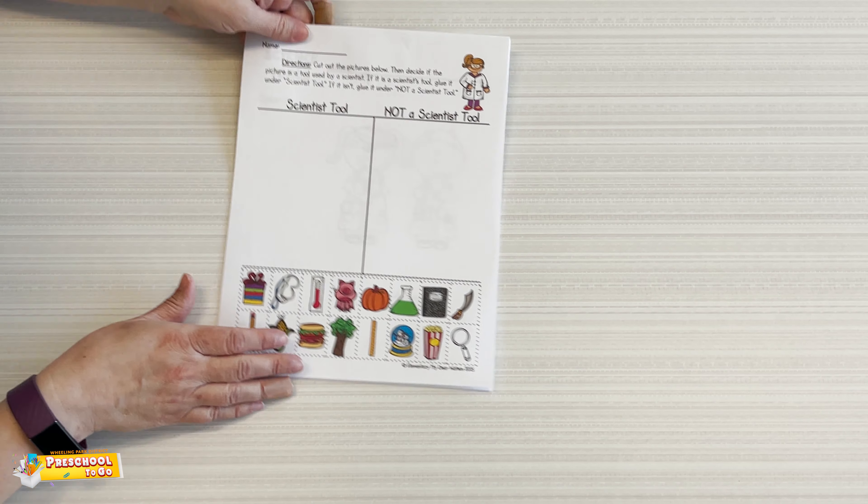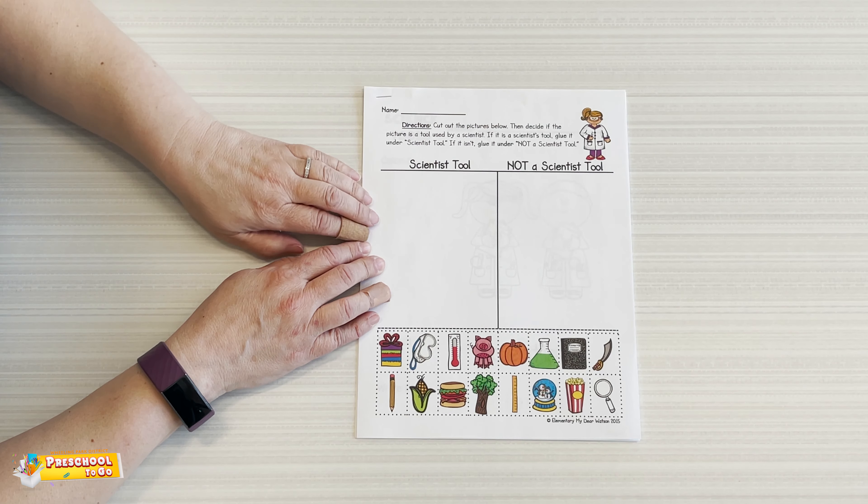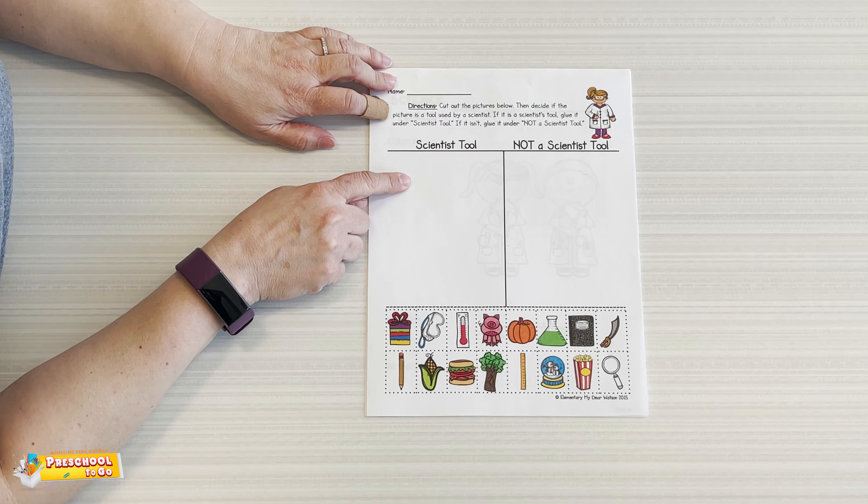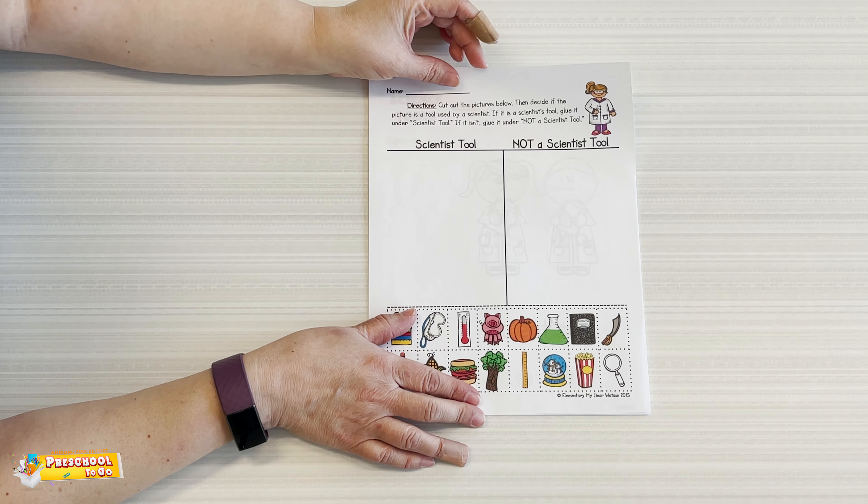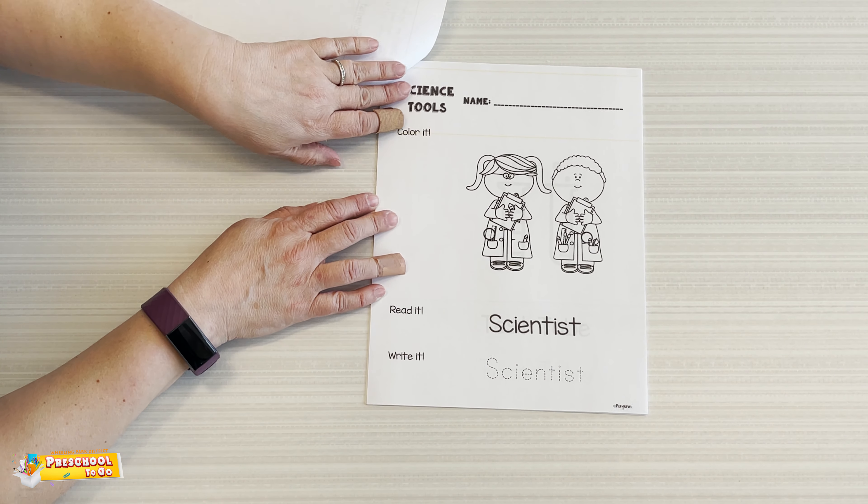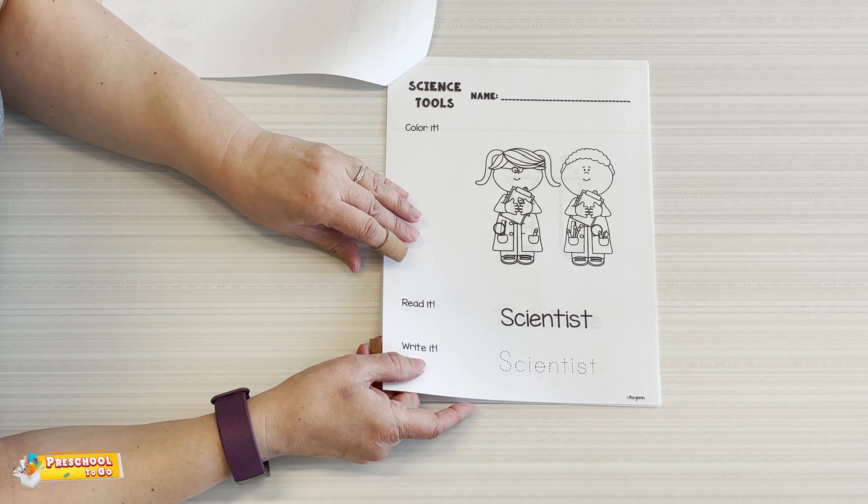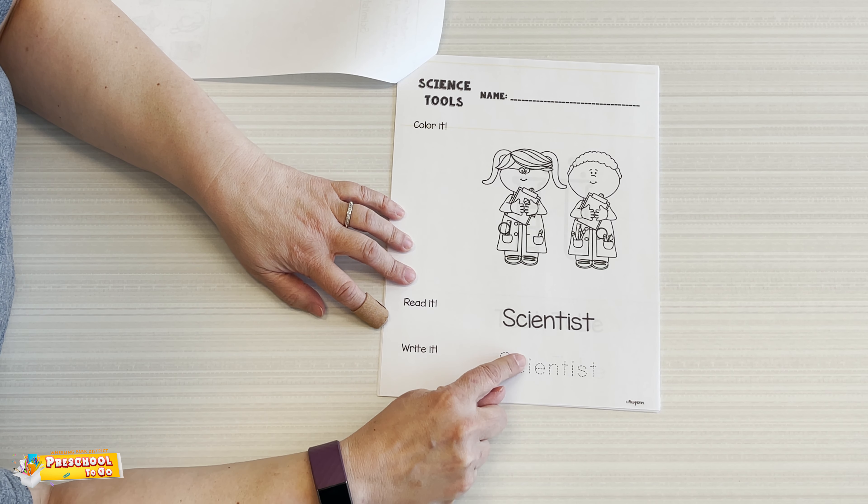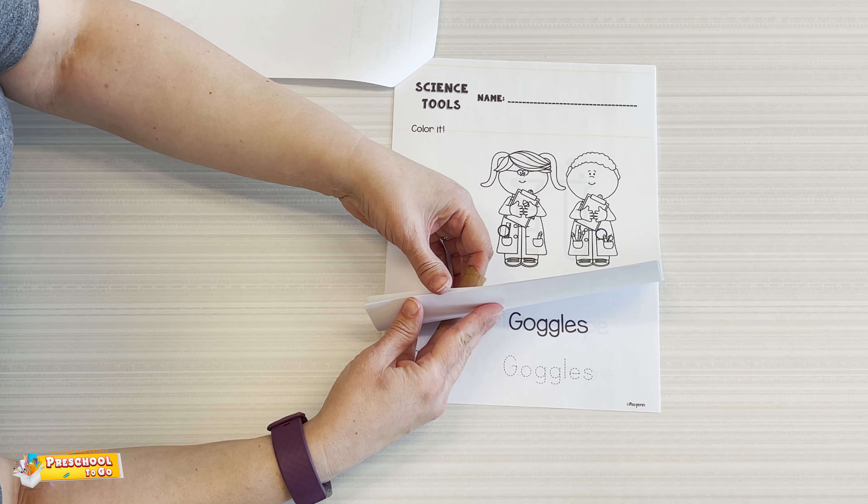Then we have a packet that says name here and the directions are here. Down here you're going to cut out all these things. Are they scientist tool or not a scientist tool? We're going to come back to that in just a moment. But inside this packet it talks about scientist tools. So here's a scientist. It's a person that studies things in science. You can read the word and then you can trace over the word and write your name. Practicing your name is always a good thing.